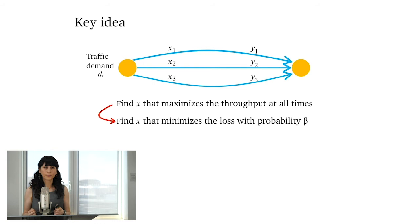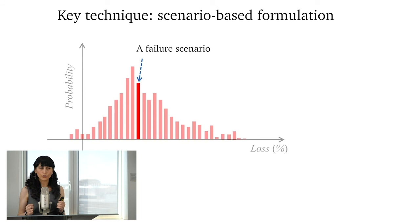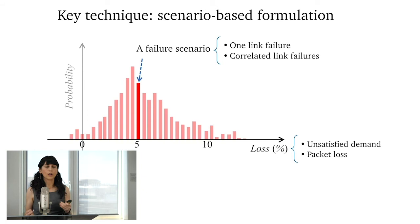So how do we do this? Let's think about a given failure scenario. The key technique that we're using is a scenario-based formulation. Let's take a failure scenario. This failure scenario could be one link failure or it could be a set of correlated link failures. Let's measure the loss associated with this failure scenario. This loss could be the amount of unsatisfied demand, packet loss, or an increase in latency. And let's measure the probability associated with this failure scenario.